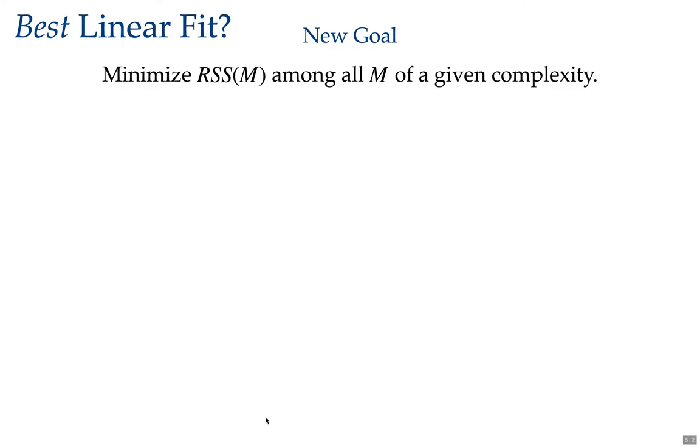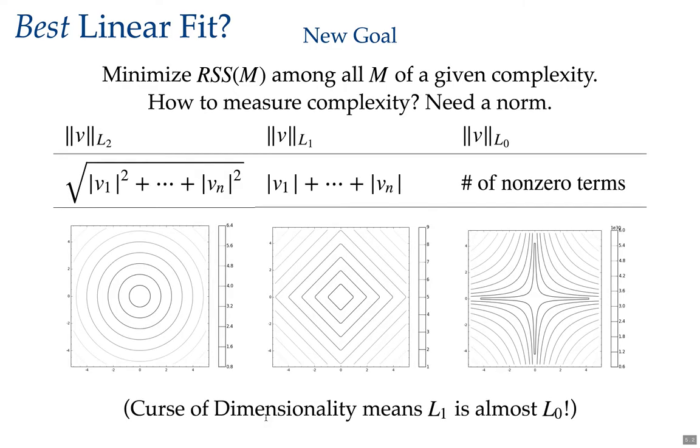So this is the time to talk about the LP norms. There are actually many ways to measure lengths in a vector space. You're most familiar with what's now called the L2 norm, the Euclidean norm, or the Frobenius norm. This is where you take the components of your vector, square each one, add them up, and take a square root. It's familiar since grade school. The level sets of the 2 norm are what we think of as circles.